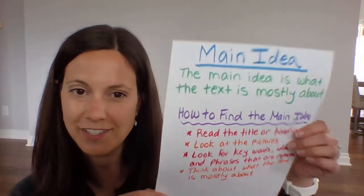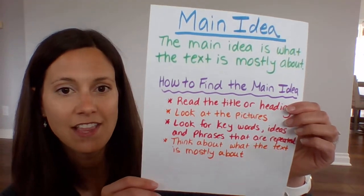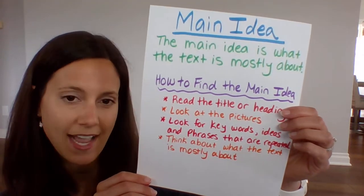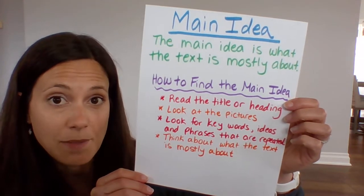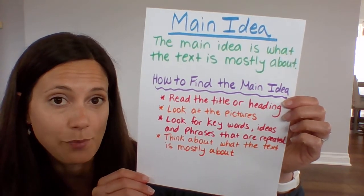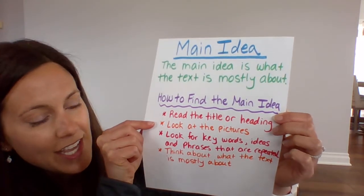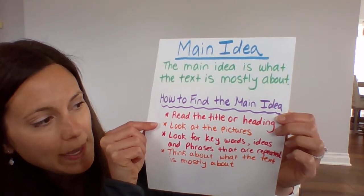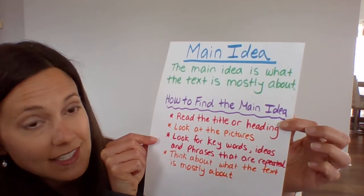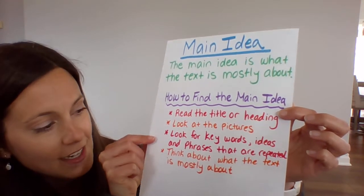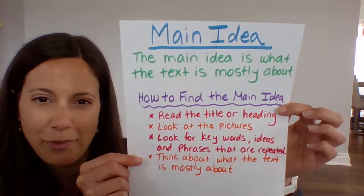The main idea of a text is what that text is mostly about. Here are some ways that you can find the main idea when you're reading a text: you can read the title or heading, you can look at the pictures, you can look for keywords, ideas, and phrases that are repeated, or you can think about what the text is mostly about.